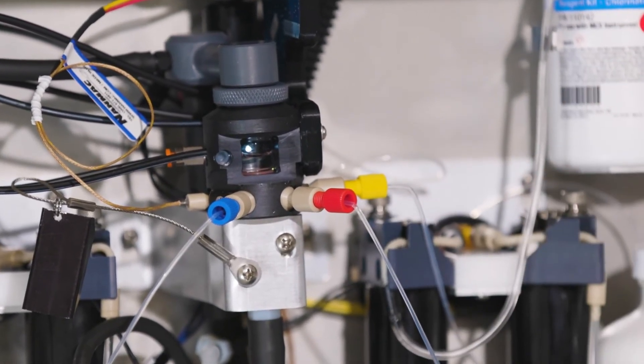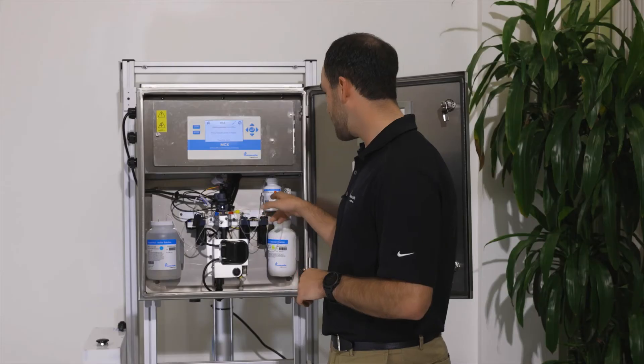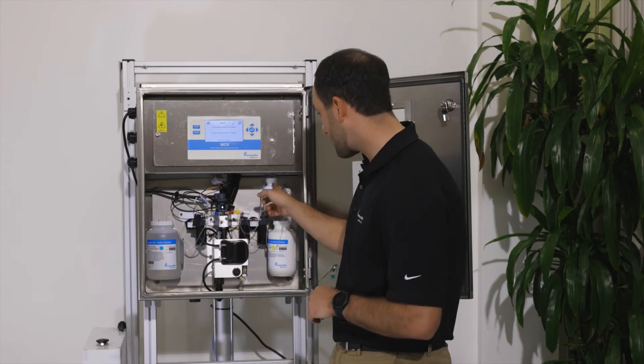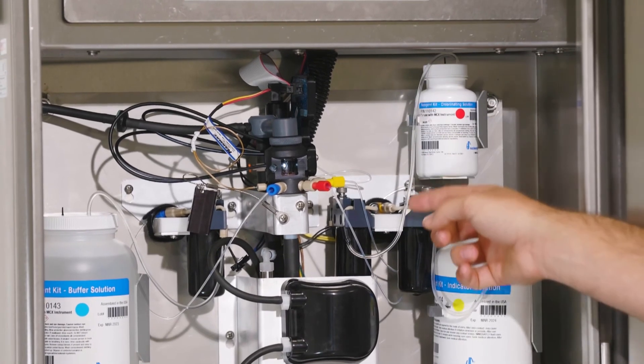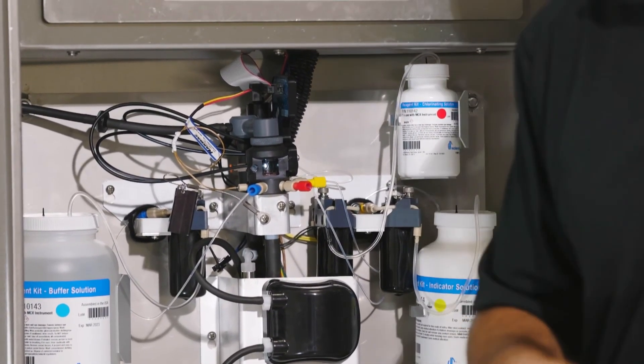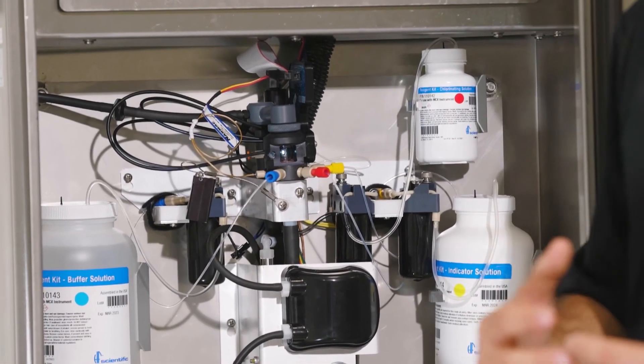What you want to watch for while you're priming your reagents is that you have liquid to start moving through the lines and into the cuvette. As you can see, the little air bubbles will travel through the line and eventually make it into the cuvette. This is a great way to troubleshoot and make sure that you're getting your reagents into the sample cell.